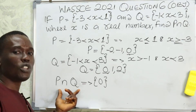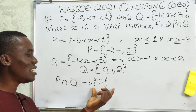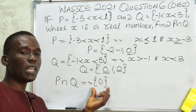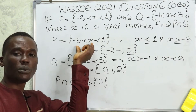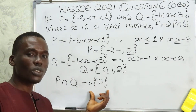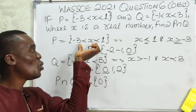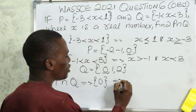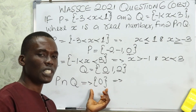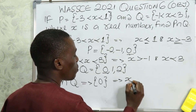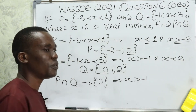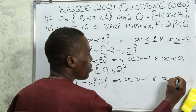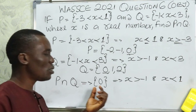The question now is how can we express this back as an inequality range, because we need to write the answer as an inequality range since the options are given in that form. For x to equal zero, x must be greater than minus one and x must be less than one. So we need to find the inequality range that gives us zero.